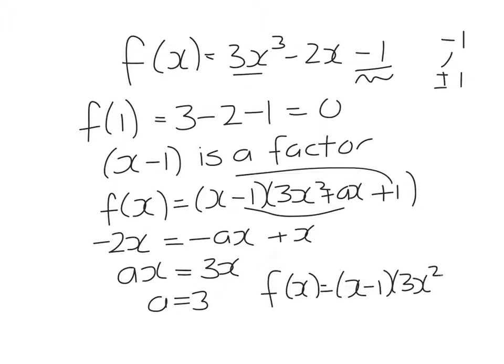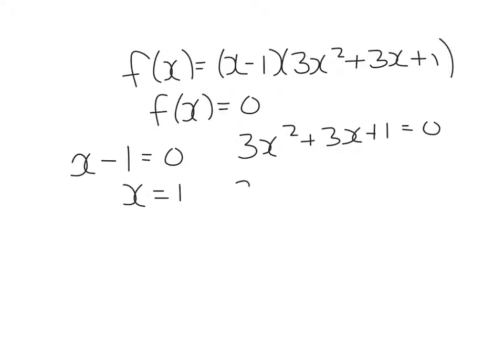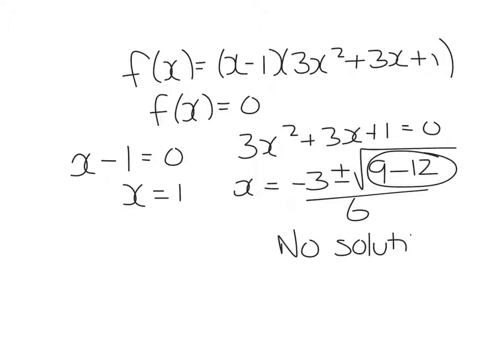If I then let f of x equal zero, x minus one has to equal zero, which gives me a solution of x equals one. Three x squared plus three x plus one equals zero. Using the quadratic formula, x equals minus b plus or minus the square root of b squared minus four ac, which is twelve. And what I see here is this is going to give me a negative, so there are no solutions to this equation.